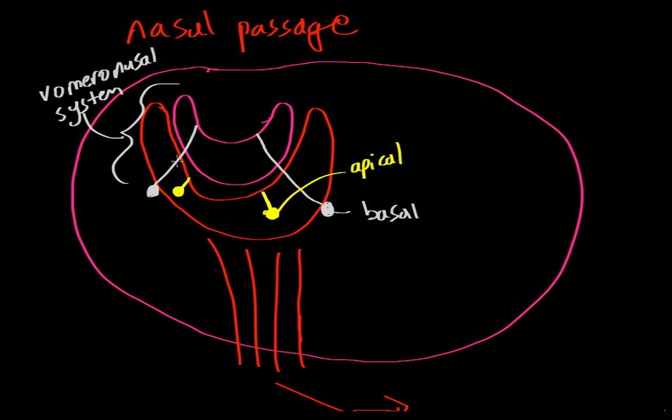And these cells, similar to regular olfactory neurons, will have little receptors at the very tips of their projections. And these receptors will be sensitive to different molecules or pheromones. So let's imagine that in the urine of that dog that peed on the fire hydrant, there is a little molecule. We'll draw it as a little triangle. That triangle will come in and it might activate a receptor on this basal cell over here.